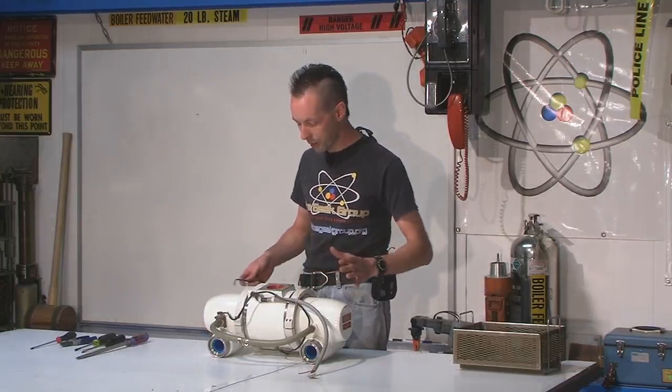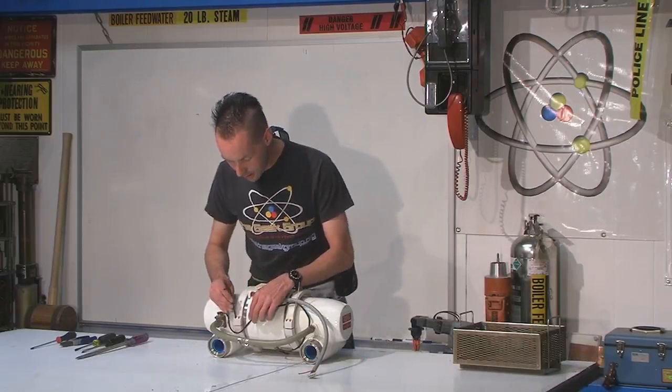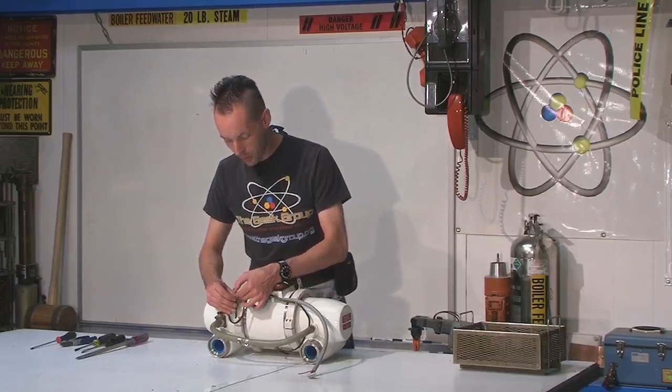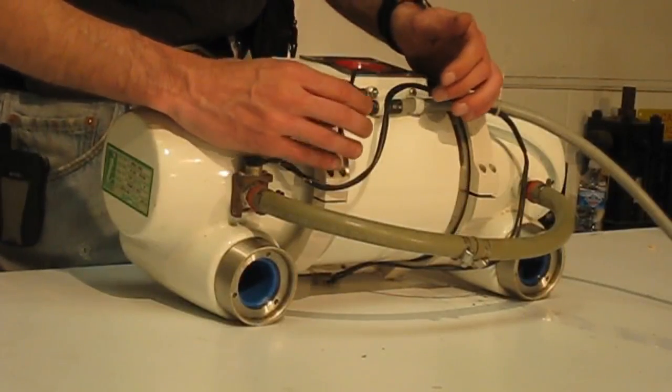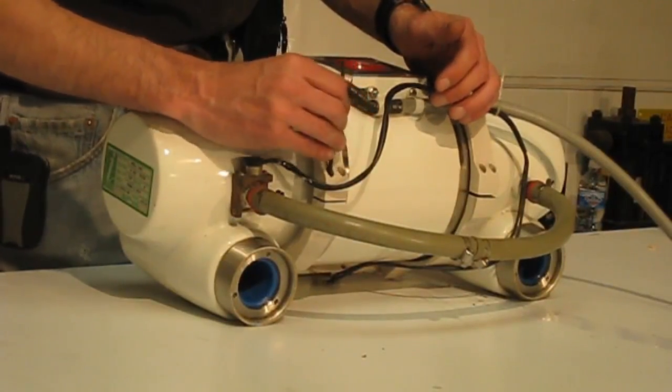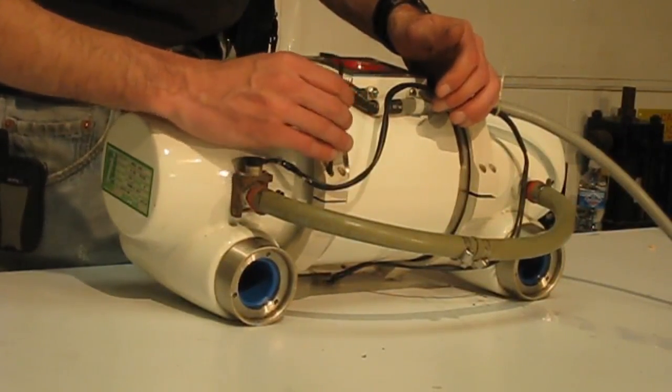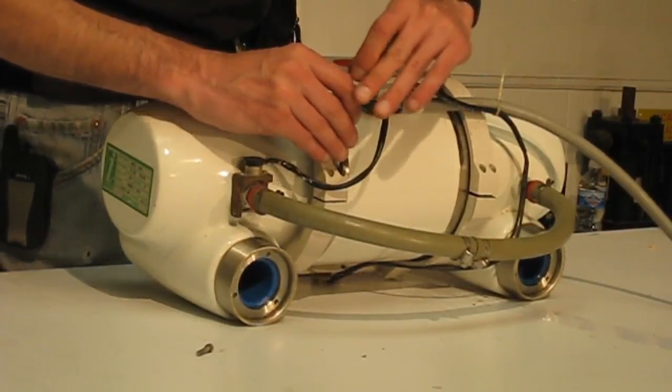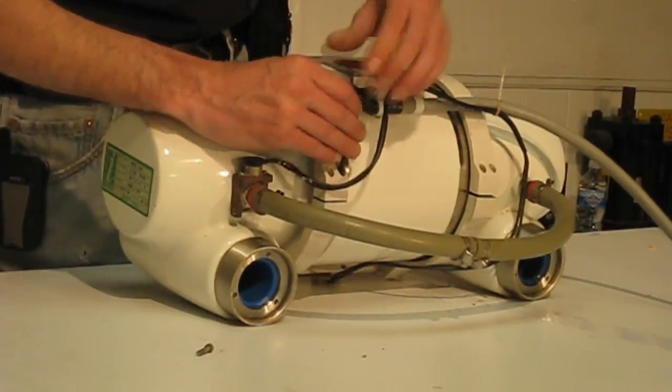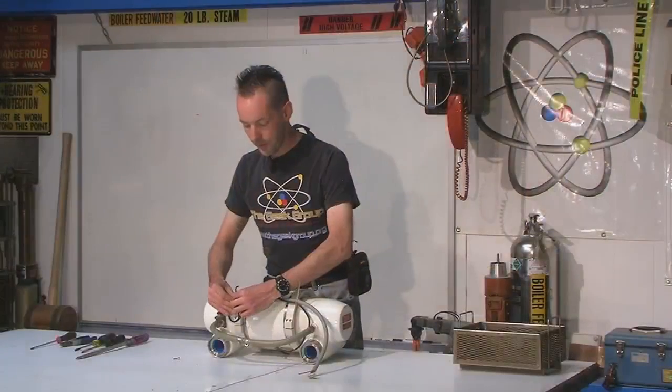But we're just going to start with some basic disassembly on the outside. And I've got these here which are recessed allen bolts. Which we're just going to pop right out. So nothing special on this. There's an allen bolt. I bet they don't all come that easy. Okay, maybe they will.